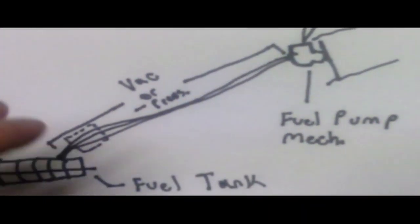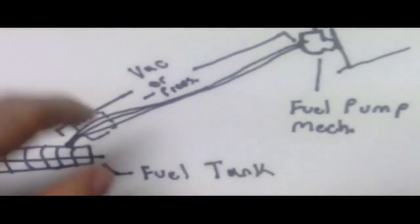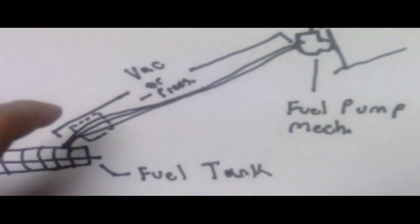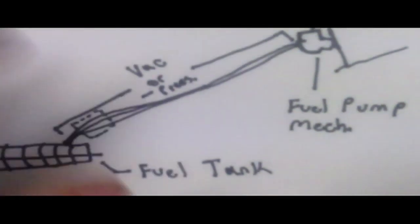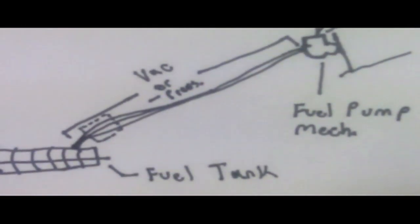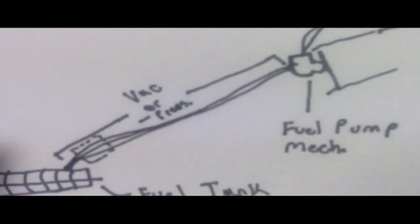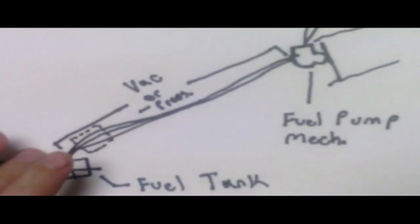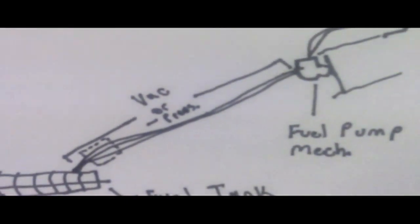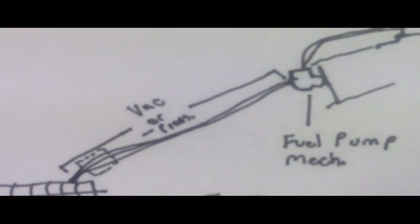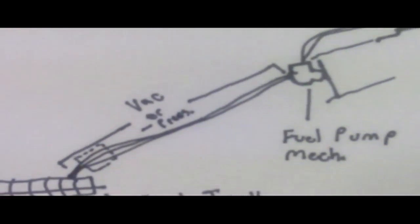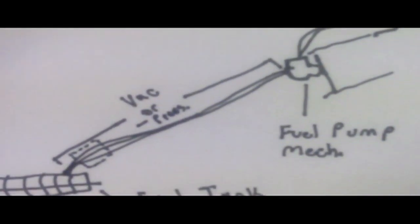And what happens here is you pretty much install a fuel pump onto your fuel line. I recommend installing it fairly close to the gas tank where it's actually cooler. And you run a wire, of course you're gonna have to run the ground. I think nine times out of ten, people ground it directly onto the frame.